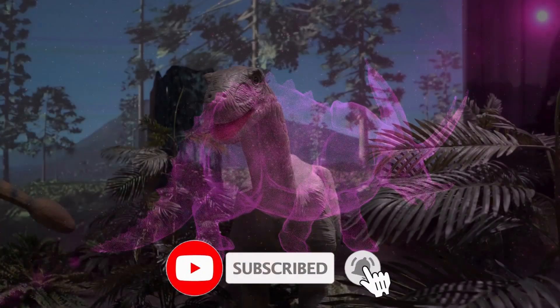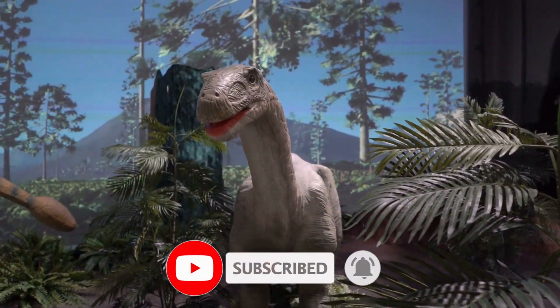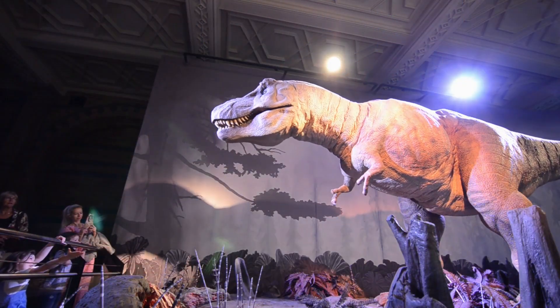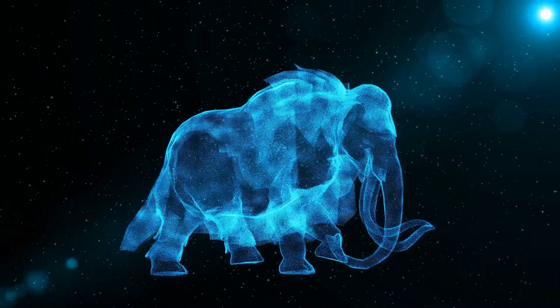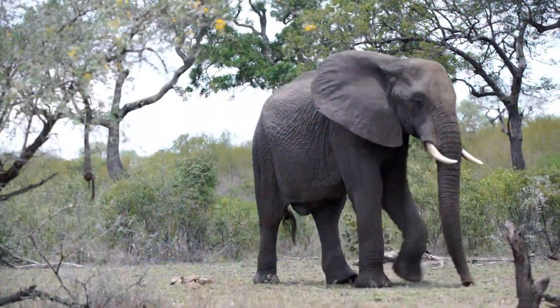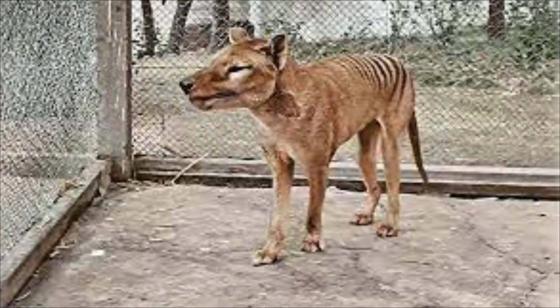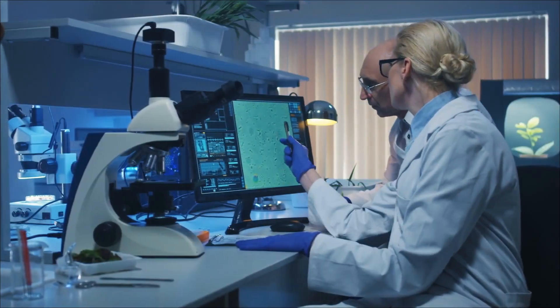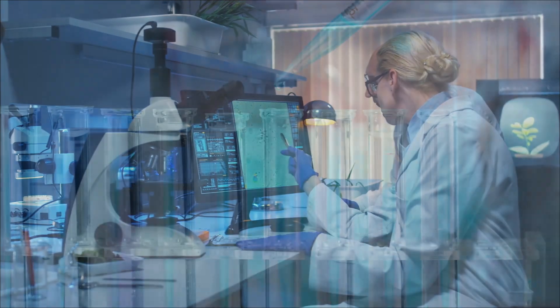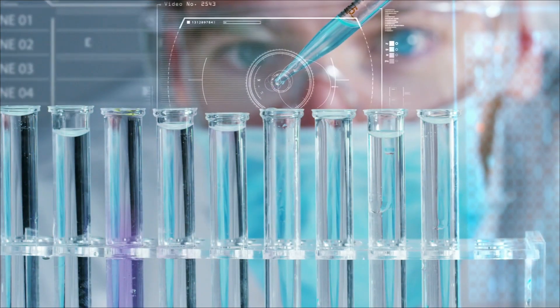The lack of living thylacine relatives presents the biggest obstacle, in contrast to current attempts to resurrect the extinct woolly mammoth, which has many living relatives. Tasmanian tigers were much more unique creatures with a genetic makeup vastly different from any living animal. However, Pask believes that the thylacine is a great candidate for the CRISPR technology.